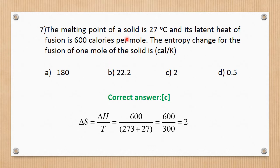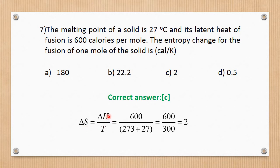Question number 7. The melting point of the solid is 27°C and the latent heat of fusion is 600 calories per mole. The entropy change for the fusion of one mole of solid: delta S = delta H / T = 600 / (273 + 27) = 600 / 300 = 2. The correct answer is C.